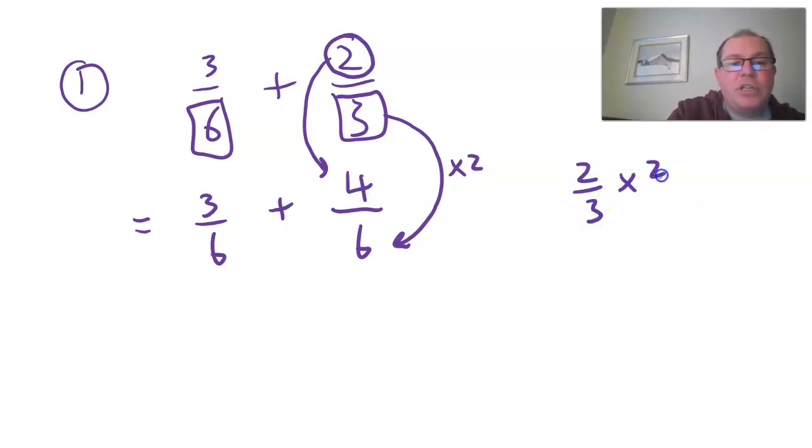I've multiplied two thirds by the number one, two over two. Two times two is four, three times two is six. And so two thirds is equivalent to four sixths. Now it's beautiful because we're counting three sixths add four sixths. And three sixths add four sixths is how many sixths have you got? You've got seven sixths.